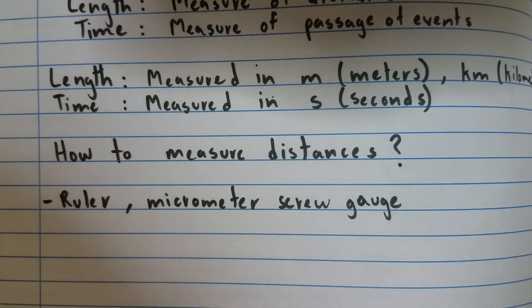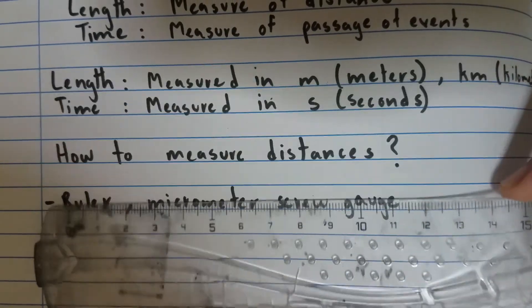So how do you measure distances? One may ask. Well you could use a ruler if you're measuring in centimeters or inches. But inches isn't commonly used in physics because we usually use SI units like meters and centimeters. So here I have this ruler you could use it to measure in centimeters.